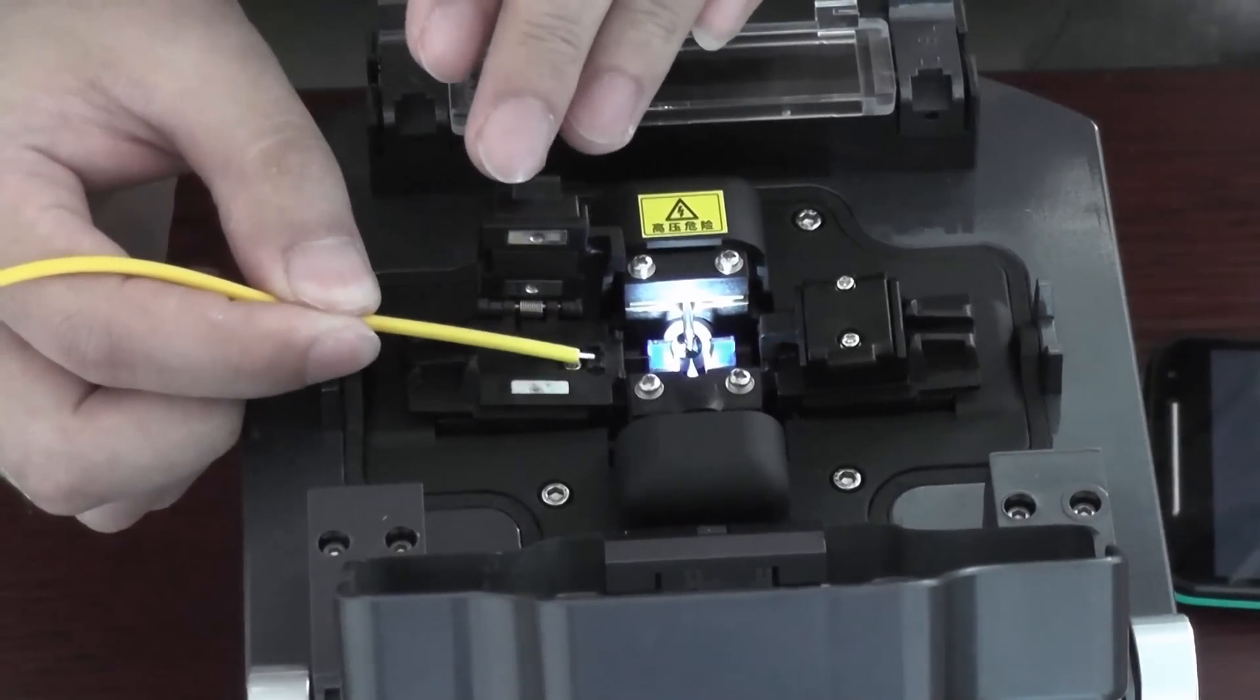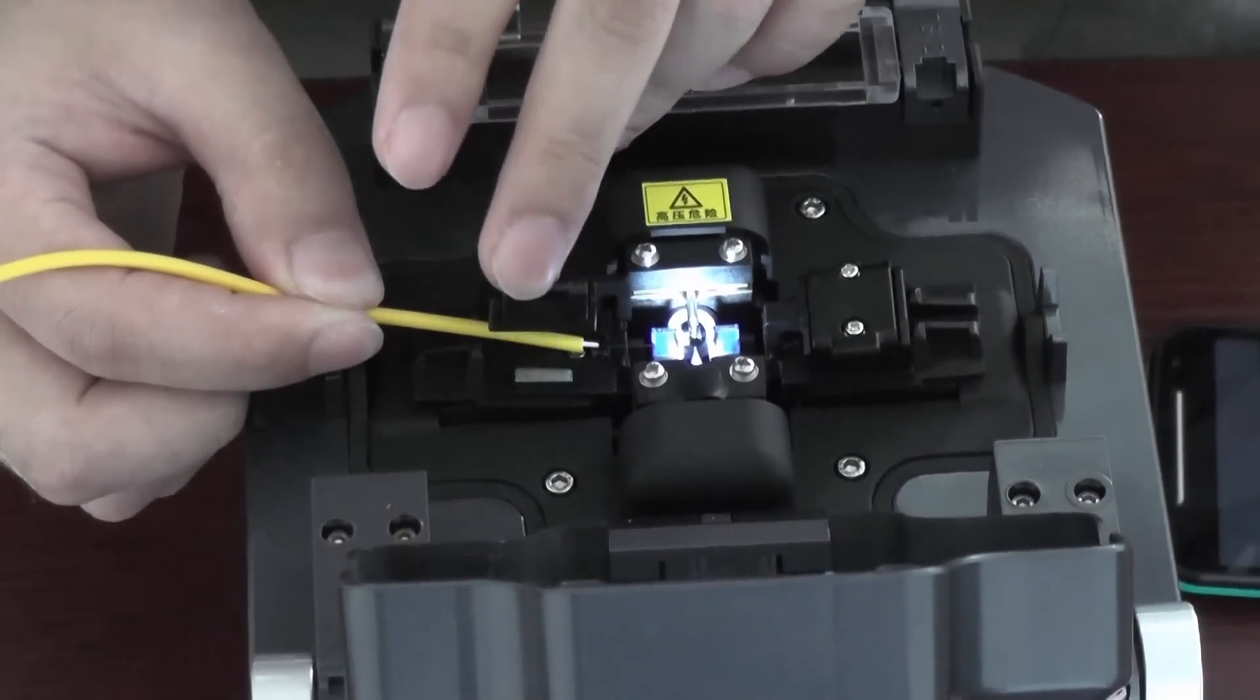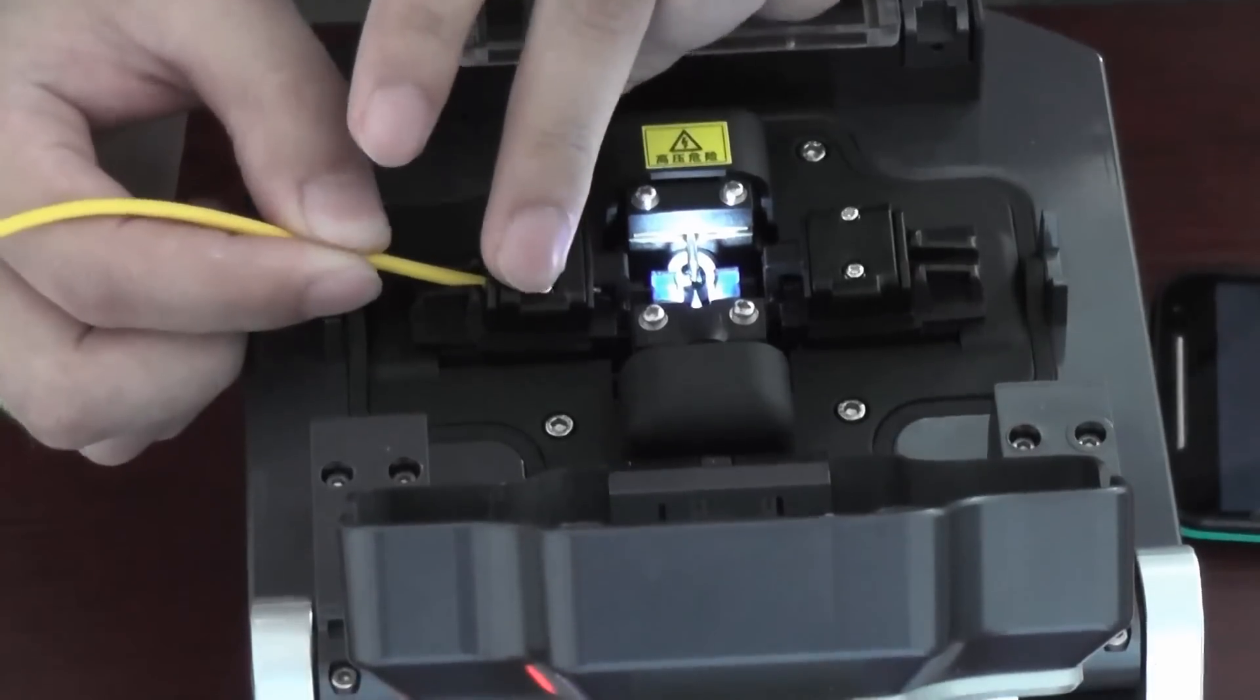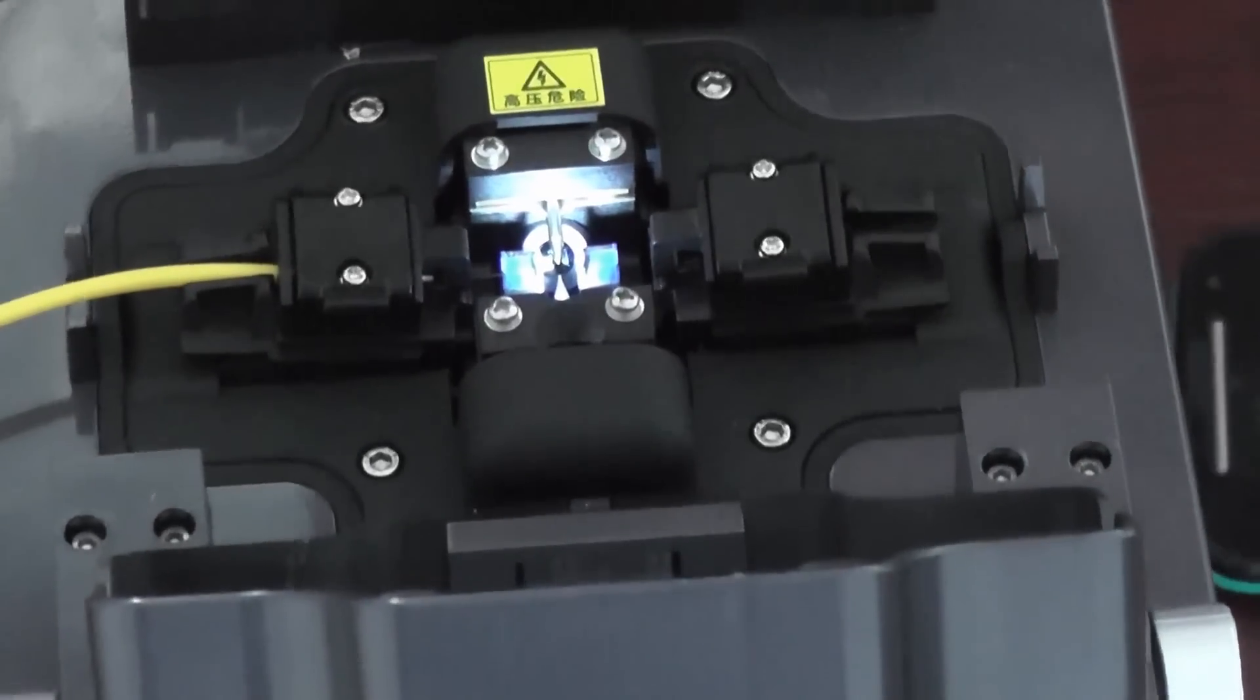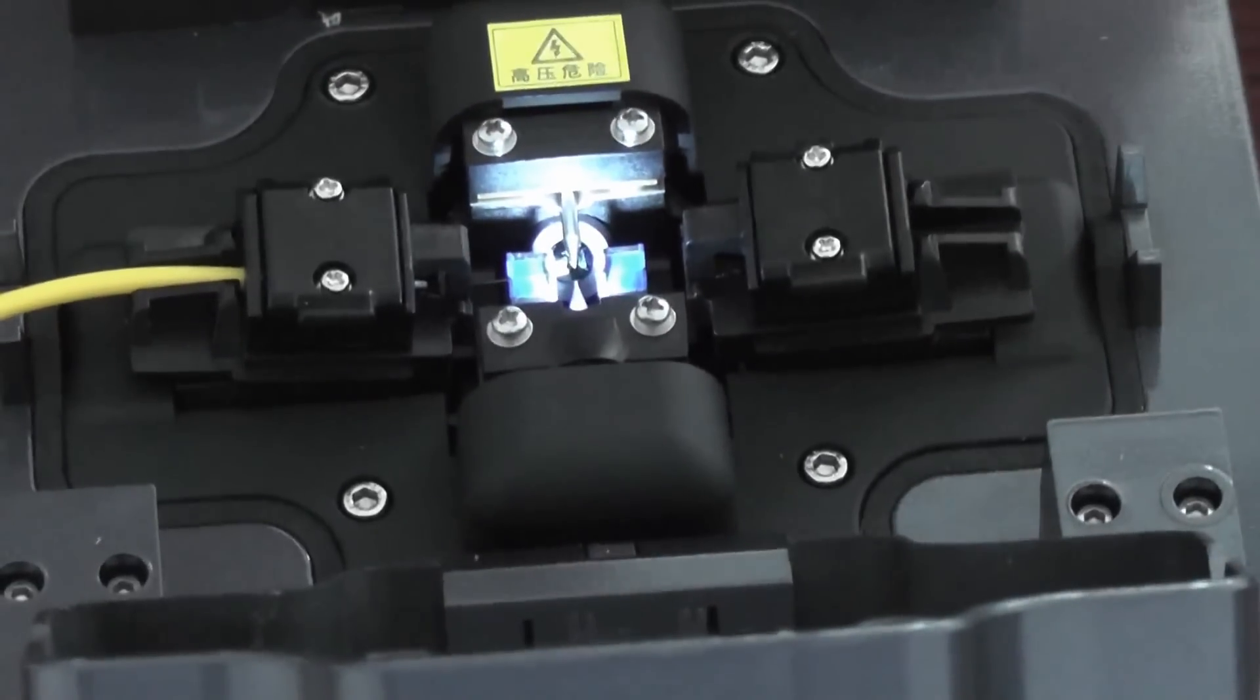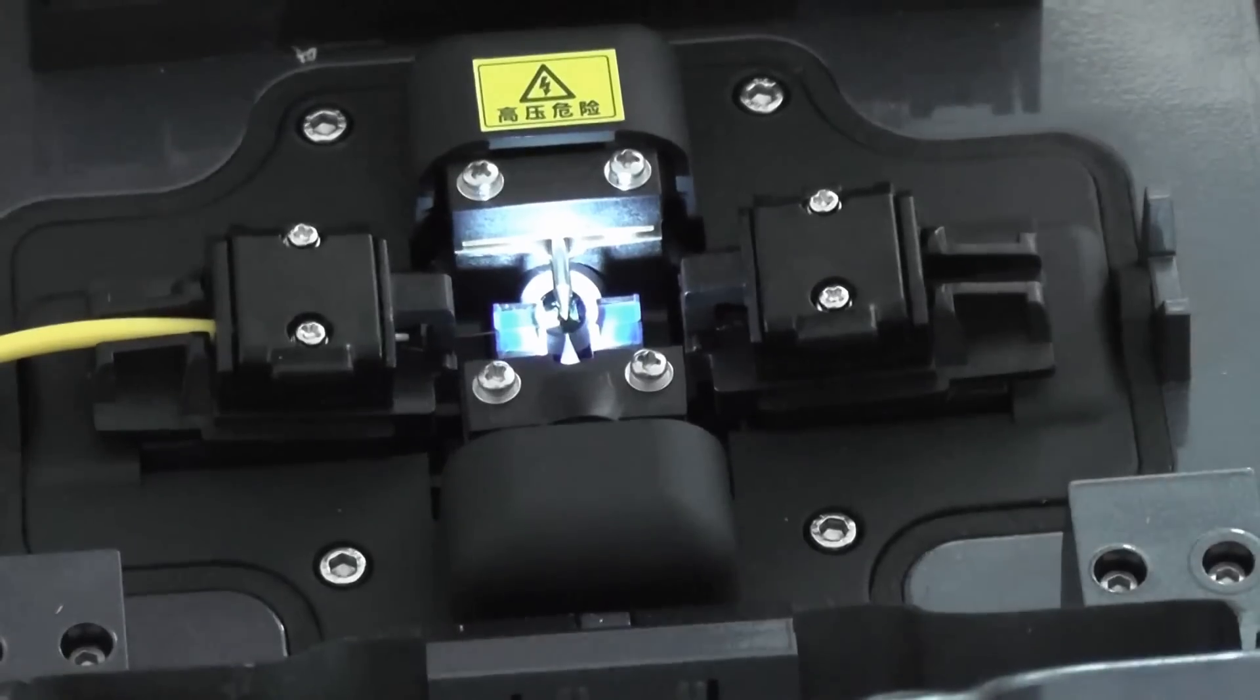You can see, and okay, close it. This is the rubber insulated fiber, or this one.